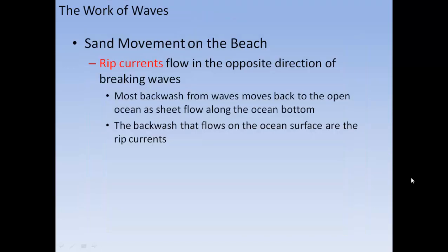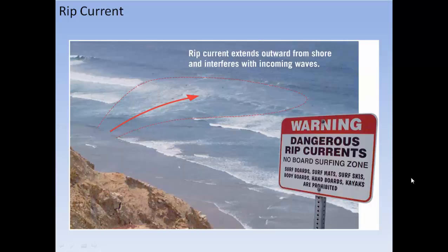Rip currents flow in the opposite direction of breaking waves. Most backwash moves back to the open ocean in sheet flow along the ocean bottom. Backwash flows on the ocean surface are called rip currents, extending outward from shore and interfering with incoming waves.